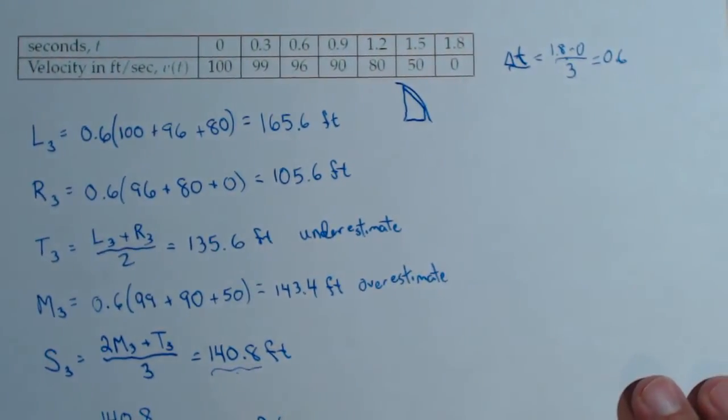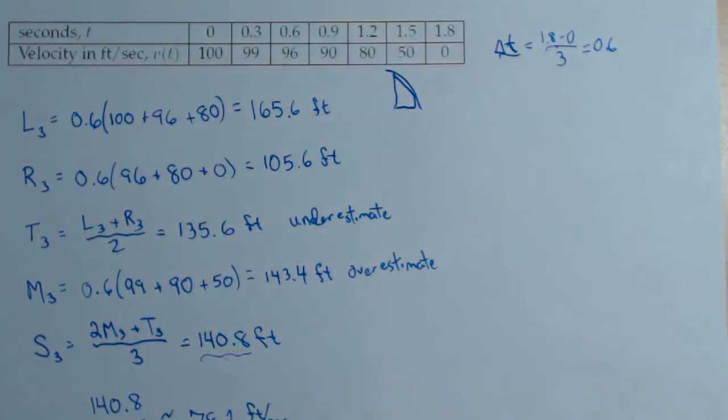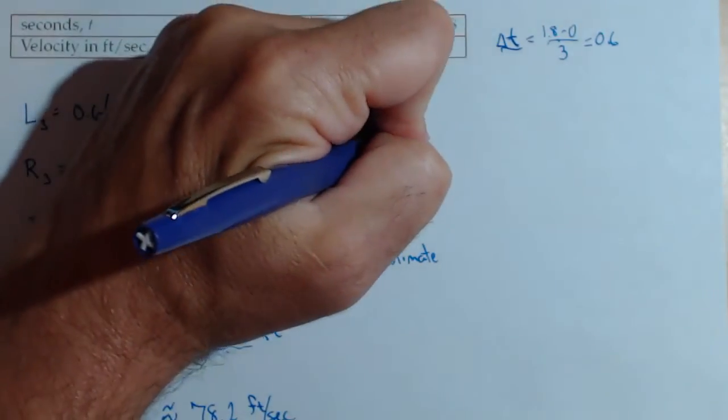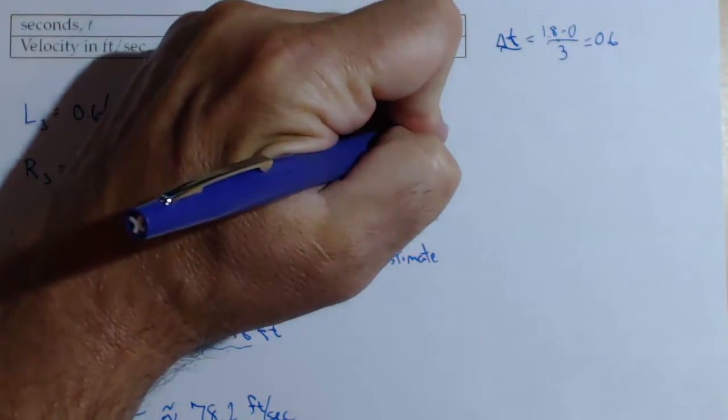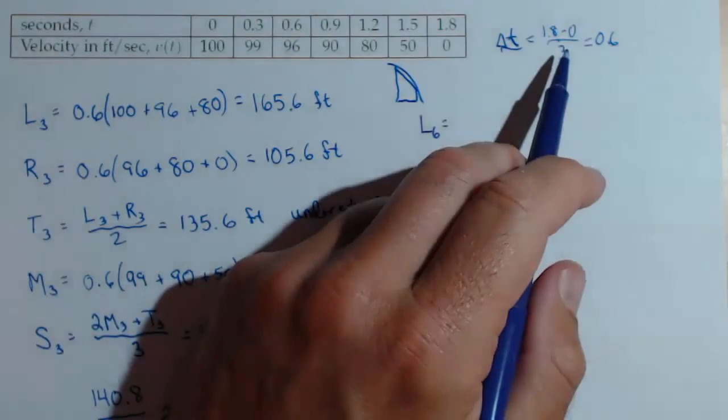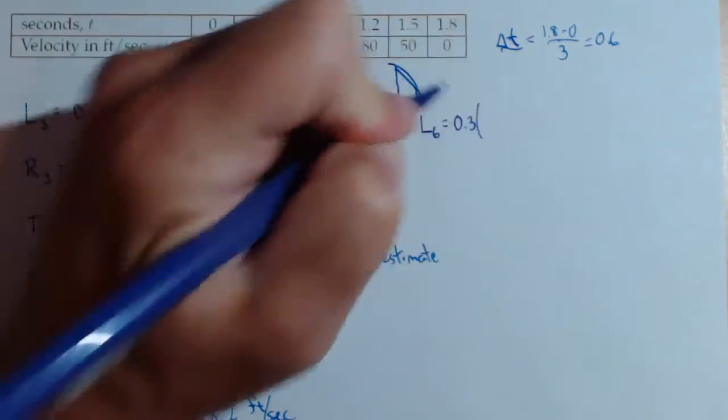Now, let's get a little bit more accurate by using some more rectangles and see what we can calculate and what we can't. I won't spend as much time on this, but let's say we want to do the left-hand rule with six rectangles. We have enough data to do that. Well, if we're using six, now we're dividing 1.8 by six. So now our delta t is 0.3.